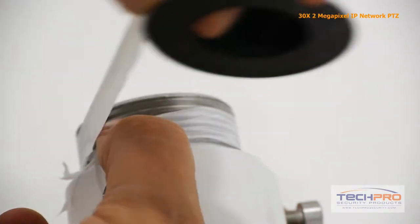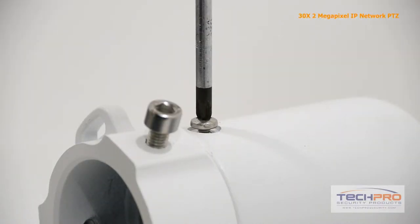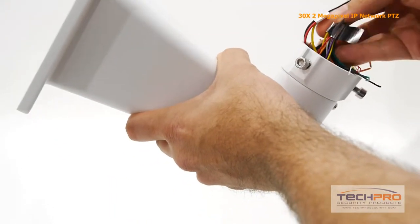Wrap the tape around the threading of the connection plate, then screw the connection plate onto the wall mount, and tighten the set screw, then feed the input and output cables through the wall mount.